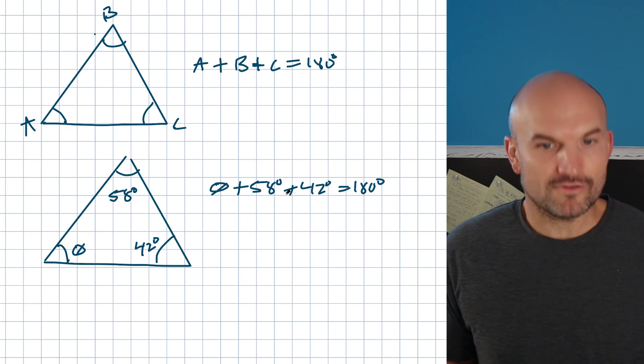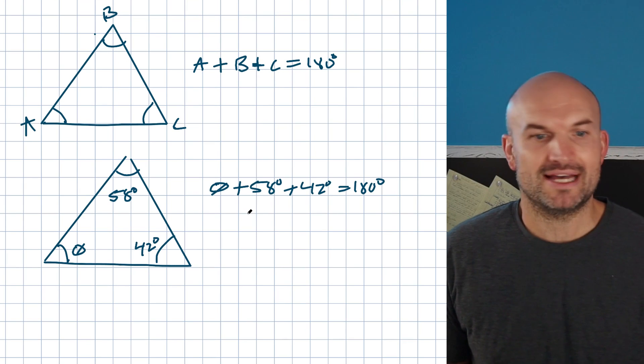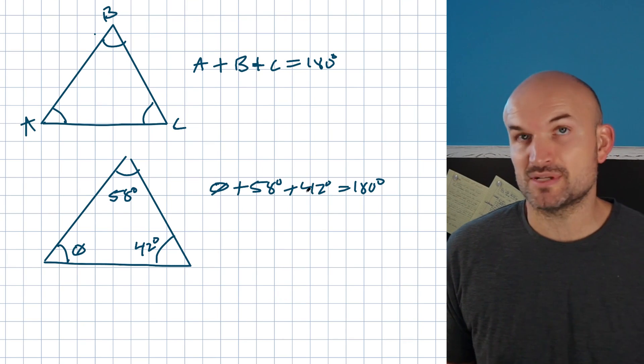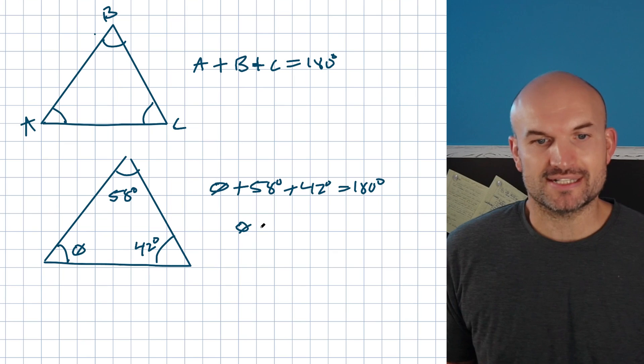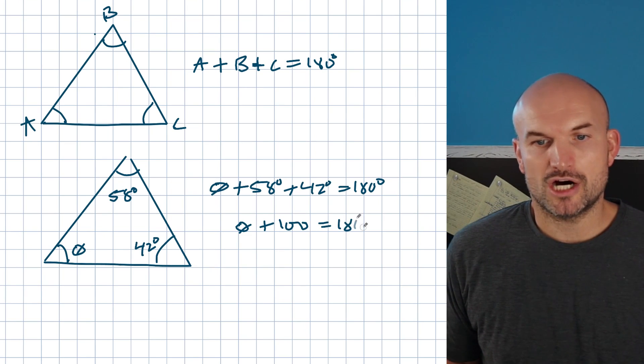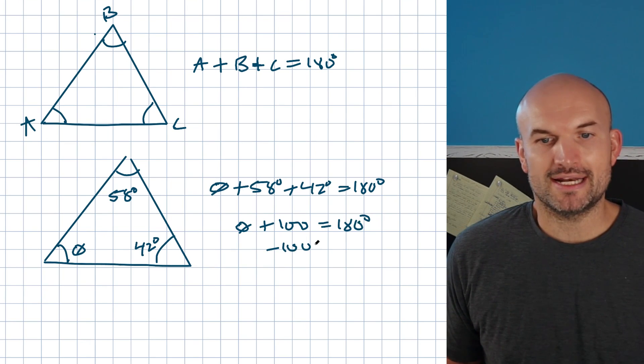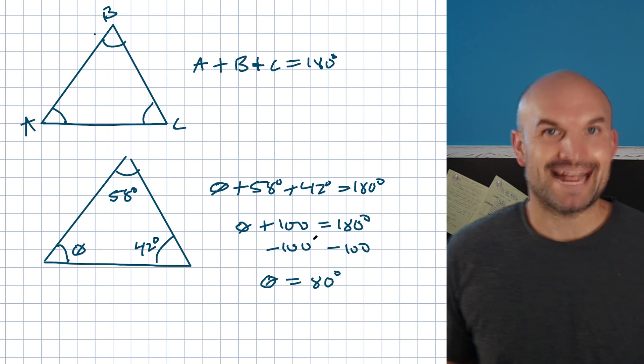Now, to solve for theta, all I simply need to do is add these two up. So, 58 degrees plus 42 degrees is going to add up to 100, so I can say theta plus 100 equals 180 degrees, and then you can subtract 100 degrees on both sides, and theta is going to equal 80 degrees.